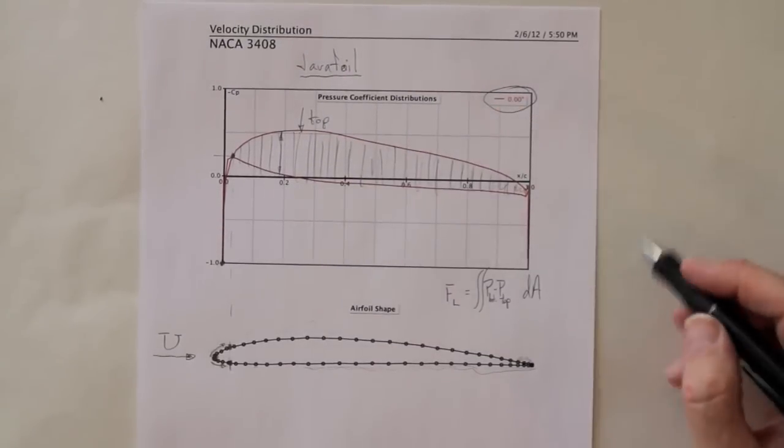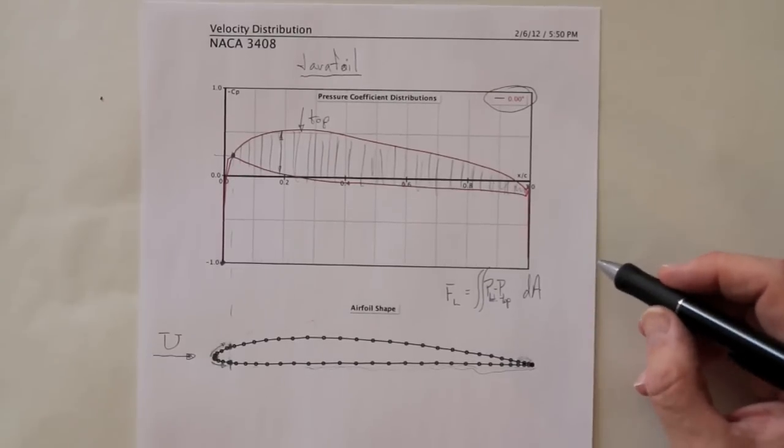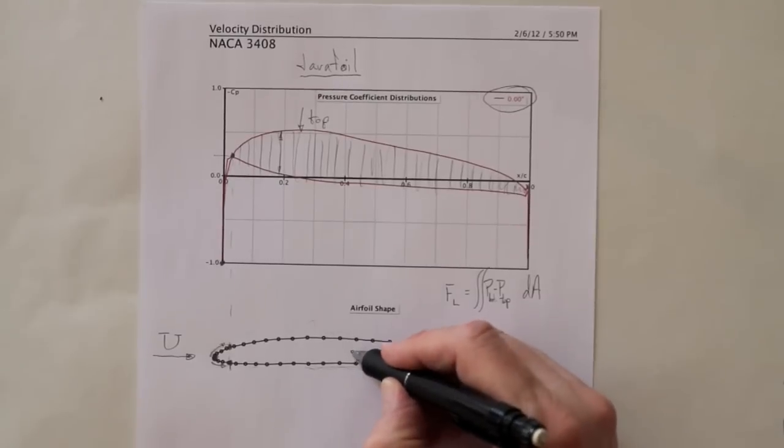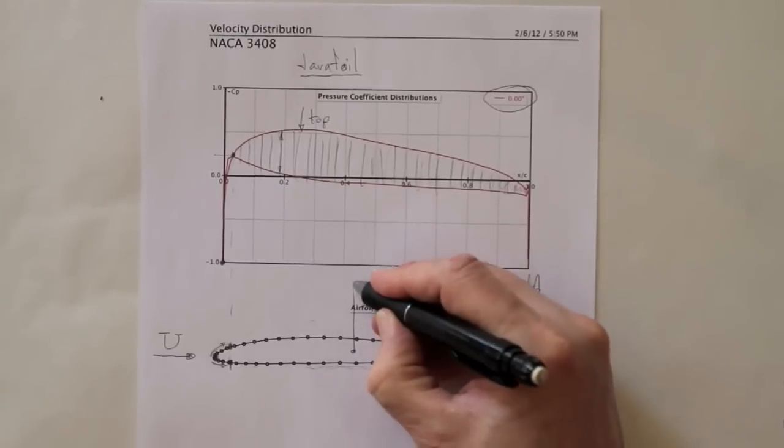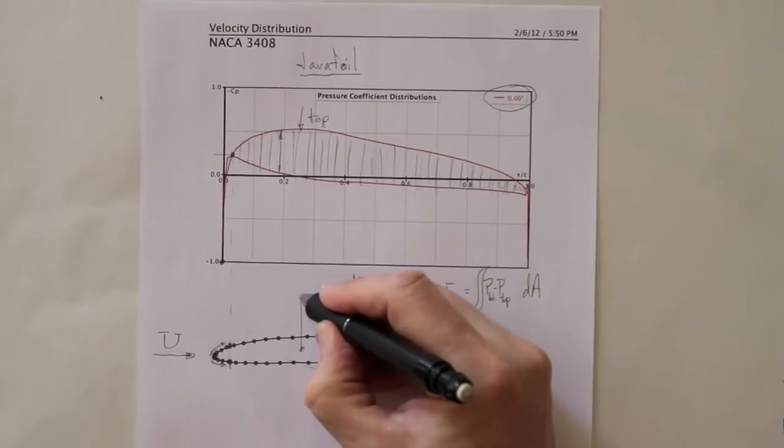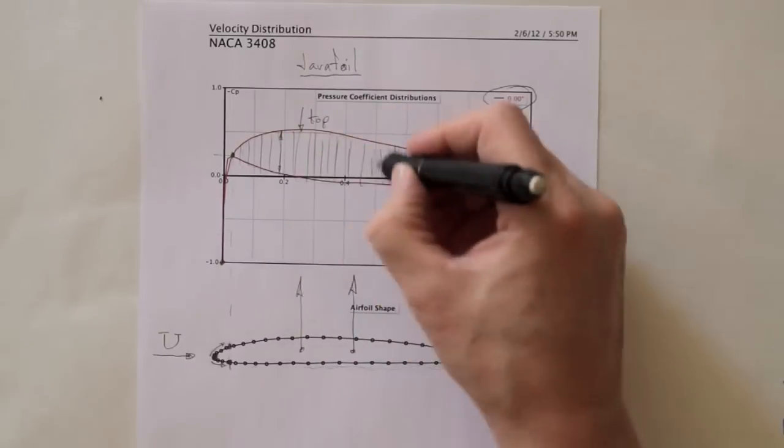This tells us something about what the distribution of lift is over that wing—that the net lift force is not like that, but something further forward like that, because the lift is concentrated here.